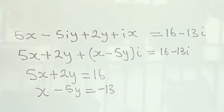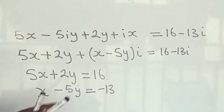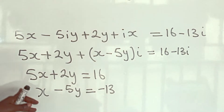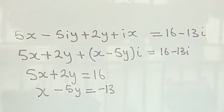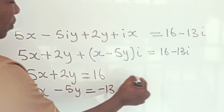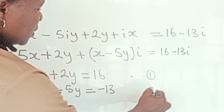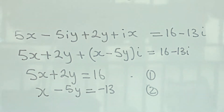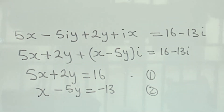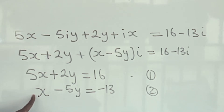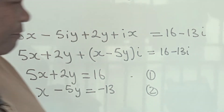We have that 5x plus 2y is equal to 16, and x minus 5y is equal to minus 13. We solve these two equations together to get our values for x and y. Call this equation 1 and this equation 2. To eliminate x, we multiply equation 2 by 5 and subtract it from equation 1.